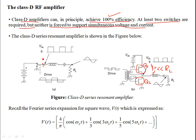In the single pole double throw switch configuration, the current that flows through the switch is the same current that flows into the load resistor RL. We have a series LCR circuit over here. The efficiency is the power out — which is the power at the load — divided by the total power available at the input of the circuit. The total power P_total equals I²R_L plus I²r.